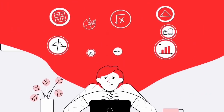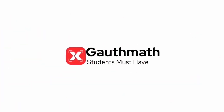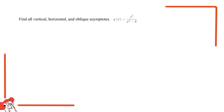Welcome to the Goth Math class — let's make math so easy! Hello everyone, I'm your teacher for this question. The question says: find all vertical, horizontal, and oblique asymptotes. We're given the function Q(x) is equal to x to the fifth power over x cubed minus eight.